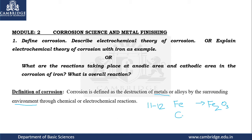Similarly, if we take copper metal and place it in sodium hydroxide, it will easily undergo corrosion to form copper hydroxide. But copper is not affected by ammonia. That means metal and medium both play an equal role in bringing about corrosion. Remembering this makes writing the definition easier.